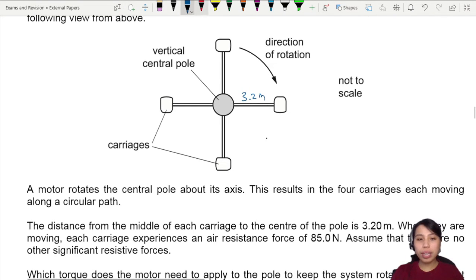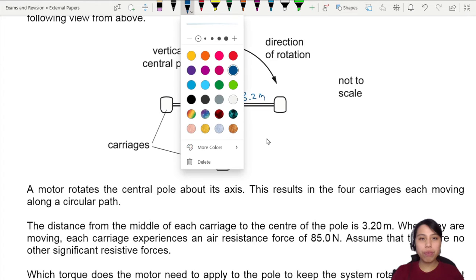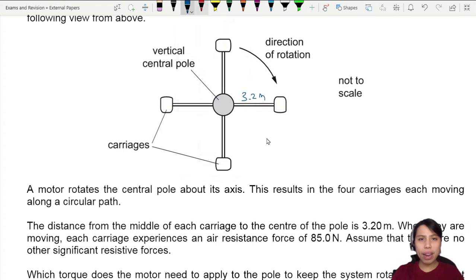When they are moving, each carriage experiences a force of air resistance of 85 newtons. That means although all the carriages are moving in this direction, so draw a little green arrow, there'll be a force opposing it and that will be a frictional force of 85 newtons. And not just that one carriage, all of them are moving at a certain velocity. So there's an opposing force of 85 in the opposite direction to the direction of rotation.